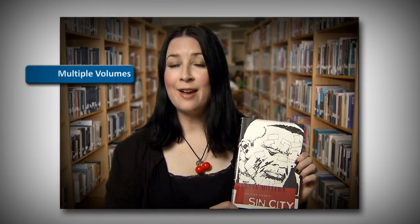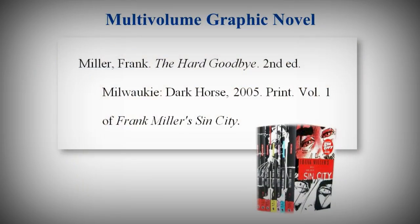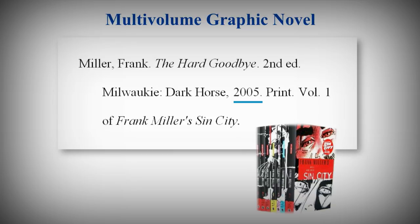Many graphic novels are part of a multi-volume series, and individual volumes can have their own titles. After the first name, enter the title of the individual volume in italics. The year should indicate when that volume was published. At the end of the citation, after the medium, indicate the volume number and the name of the series in italics. In this case, The Hard Goodbye is volume one of Frank Miller's Sin City.